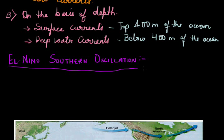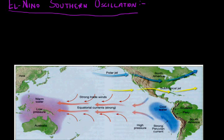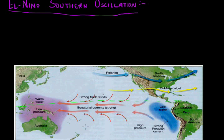The El Niño Southern Oscillation is a band of anomalously warm ocean water temperature that occasionally develops off the western coast of South America, and it causes climatic changes across the Pacific Ocean. The term 'southern oscillation' refers to the southern hemisphere, below the equator. Oscillation refers to the back-and-forth movement of wind, which continuously shifts from the western coast of South America towards the eastern coast of Australia. To understand the El Niño process, we need to understand the situation existing there.